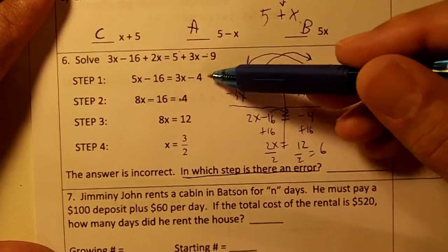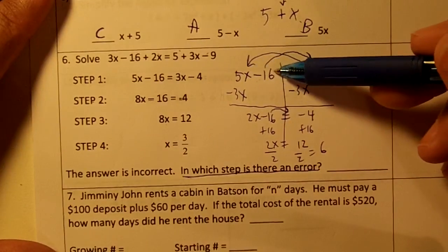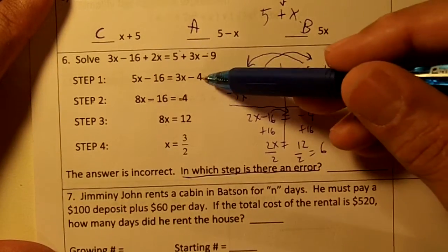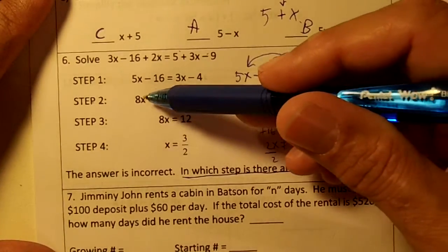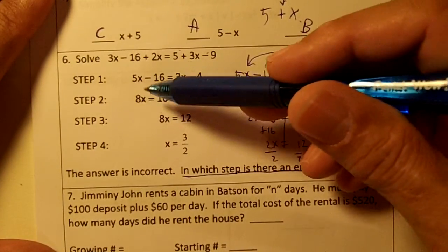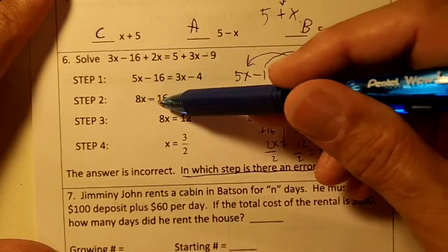This step has been done correctly: 5x minus 16 equals 3x minus 4. But on this step we should have 2x and we only have an 8x, don't we? So in step 2 we have an error right here.